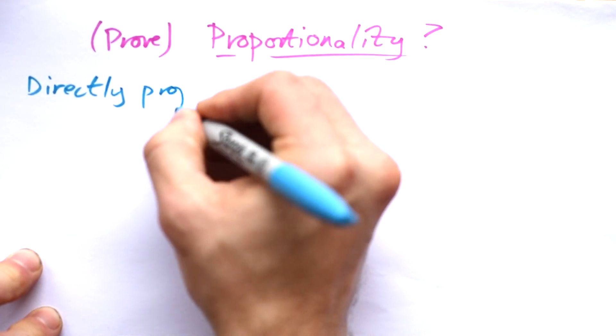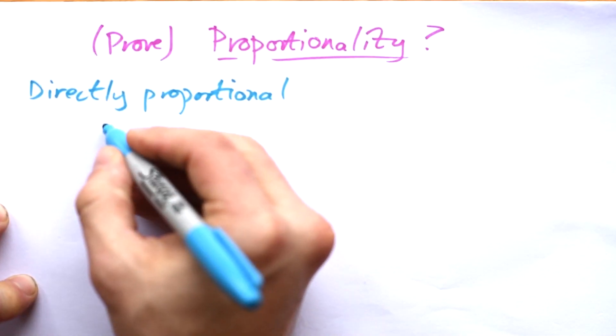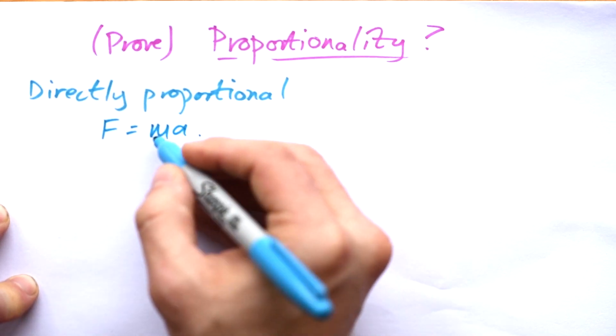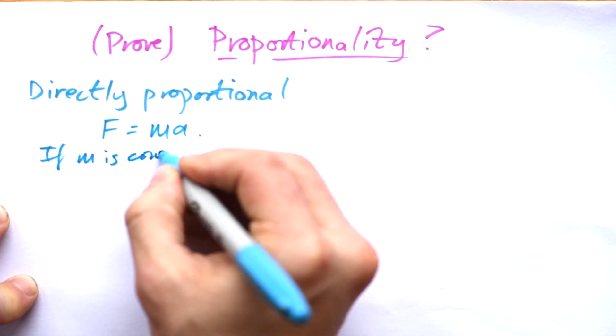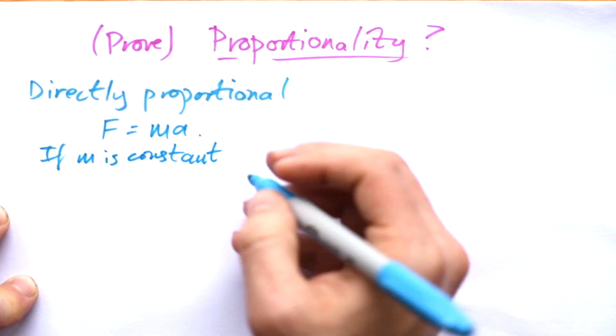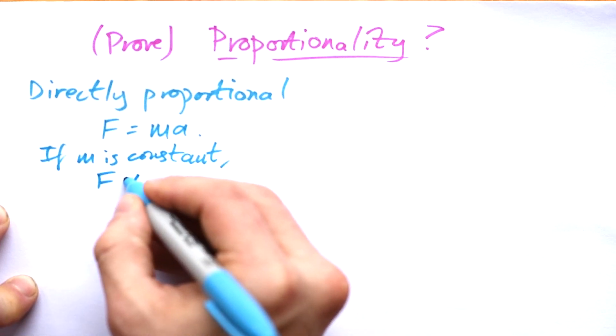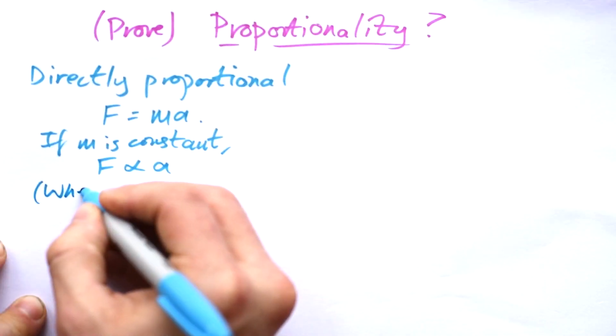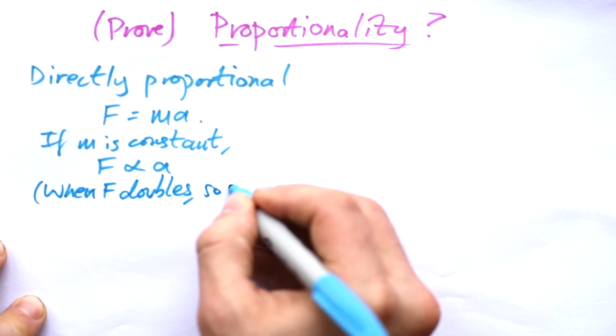We have things that are directly proportional. Let's take an equation, F equals Ma, Newton's second law. If mass is constant, that means it stays the same, then we know that if the force doubles, then the acceleration doubles. So we can say F is proportional to A. We use a fish or alpha symbol for that. So we can say when F doubles, so does A.